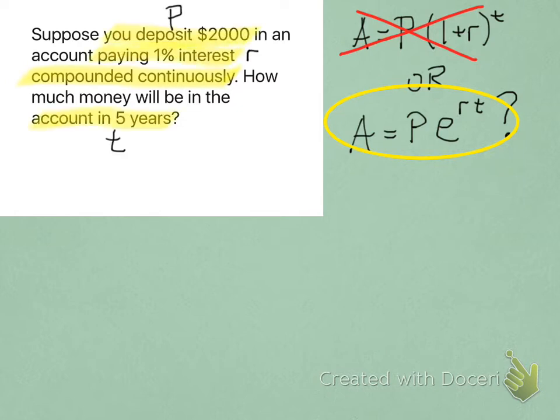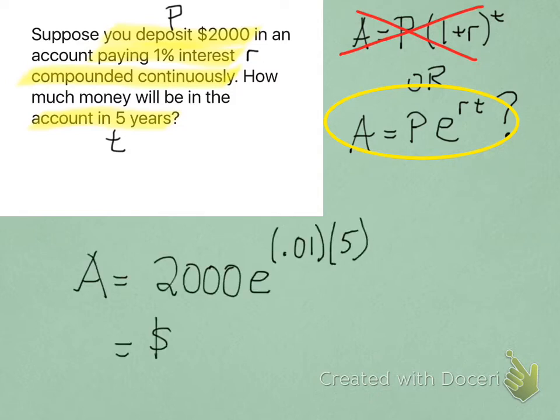Just as before, the initial amount is $2,000. The interest rate is 1%. And we want to know how much is going to be in the account in 5 years. So, you just plug in the numbers for these letters, throw it into your calculator, and you get $2,102.54, which is just a tiny bit more than what we got when it was compounded annually.